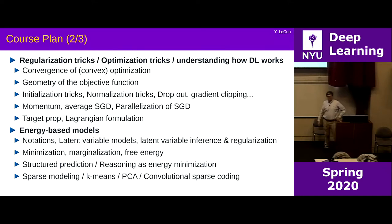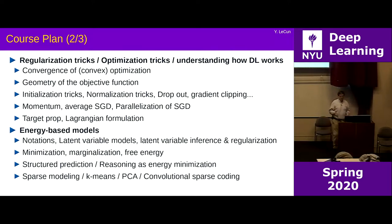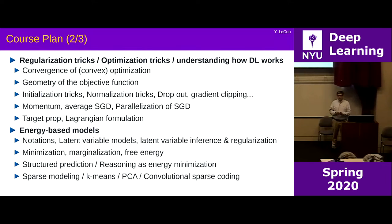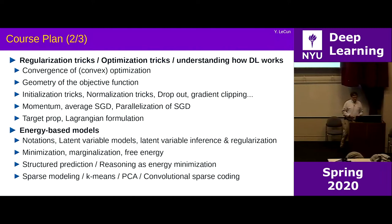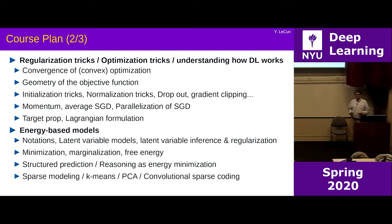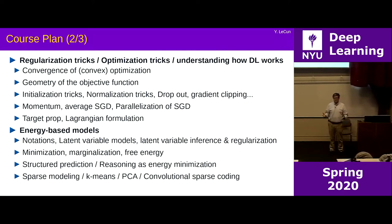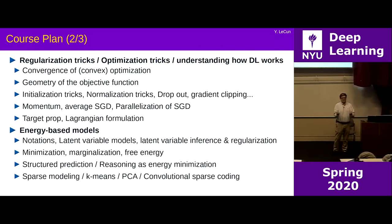Then I'll switch to my favorite topic: energy-based models. This is a general formulation of many different approaches to learning — whether supervised, unsupervised, or self-supervised — and whether they involve inference: searching for the value of variables that your system is supposed to infer. That can be thought of as a way of implementing reasoning with neural nets: you have some energy function being optimized with respect to some variables, and the result of this optimization is the value of those variables you were trying to find.